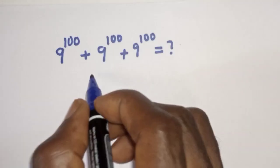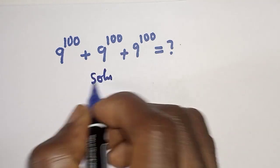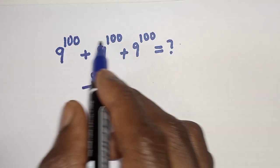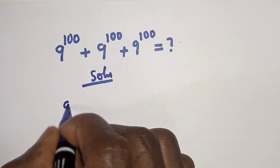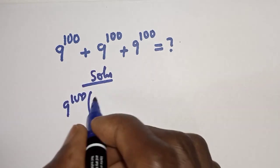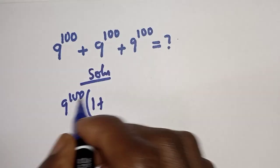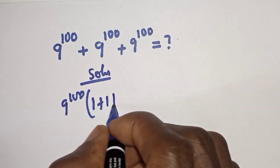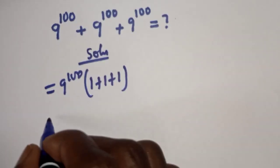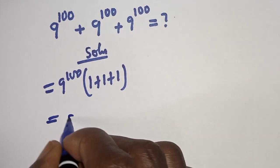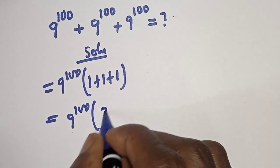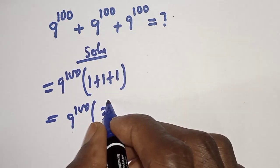Solution: 9 to the power of 100 is common, so let's factor it out. We have 9 to the power of 100 times bracket 1 plus 1 plus 1, which gives us 9 raised to the power of 100, brackets 1 plus 1 plus 1. This equals 9 raised to power 100 multiplied by 3.